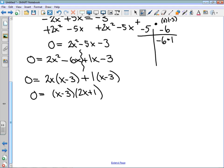Because it's equal to 0, either x minus 3 is equal to 0, which yields x is equal to 3, or 2x plus 1 is equal to 0. That gives me that 2x is negative 1, or x is negative 1 half.